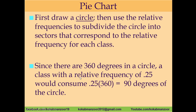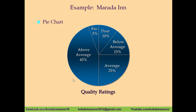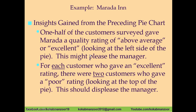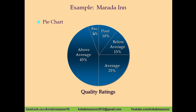Since a circle has 360 degrees, to find each slice we multiply the relative frequency by 360. For example, if the relative frequency is 0.25, then 0.25 × 360 = 90 degrees — so you draw a 90-degree portion. You don't need to draw it by hand; through Microsoft Excel, SPSS, or any software you just enter the data and it draws the pie chart automatically. It will look like this: 45% above average, 5% excellent, 2% poor, and 15% below average.